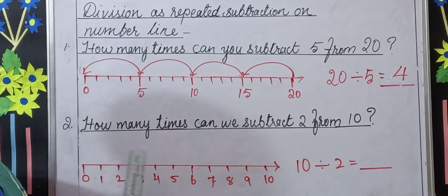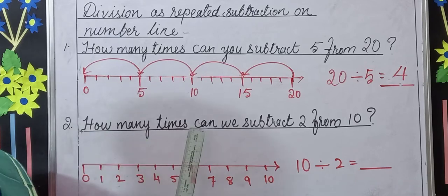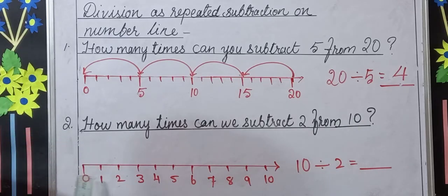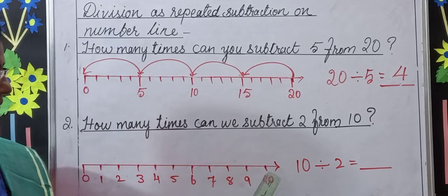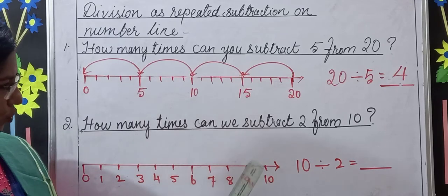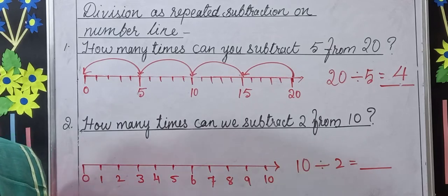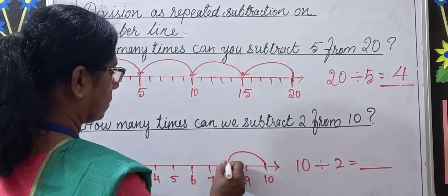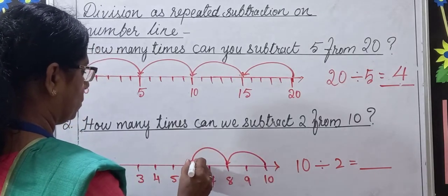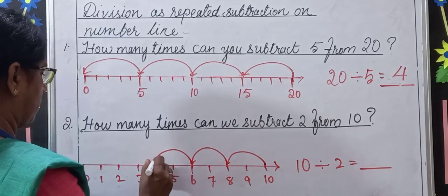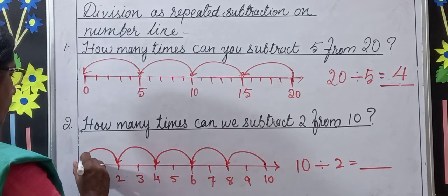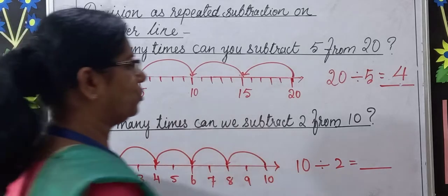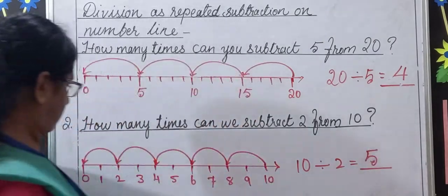Let's do one more example. How many times can we subtract 2 from 10? We have 10 numbers on the number line. Start at 10 and hop 2 numbers to the left each time. After 5 jumps you reach 0. We jumped 5 times, so 10 divided by 2 equals 5. Is that clear, children?